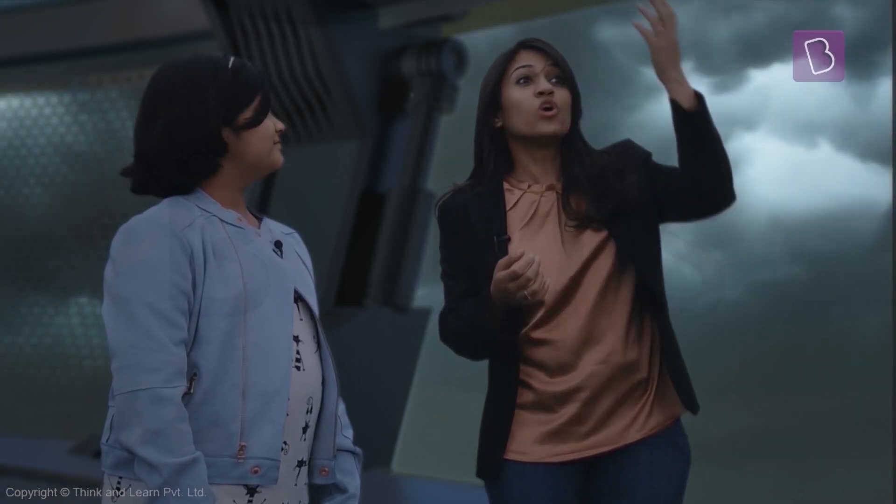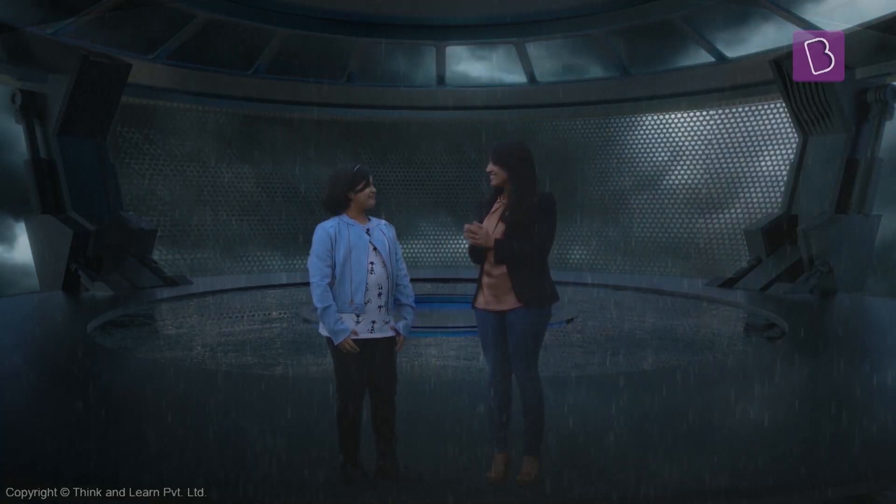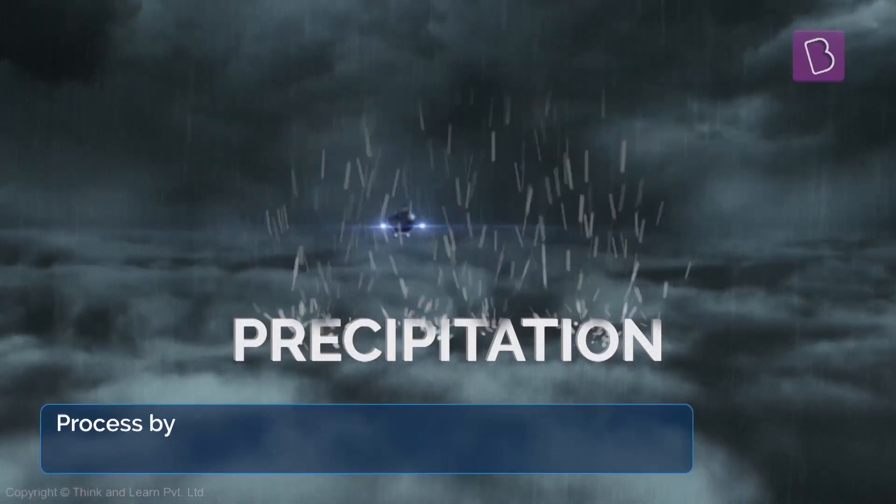As more and more of these water droplets come together, the cloud starts getting heavier and heavier until it cannot hold that water anymore. So that water starts coming down as rain. They call this precipitation.